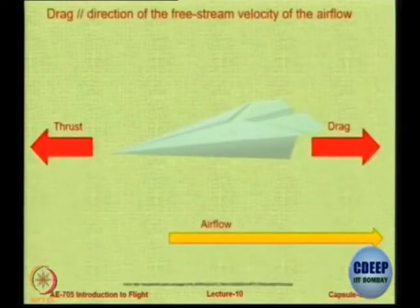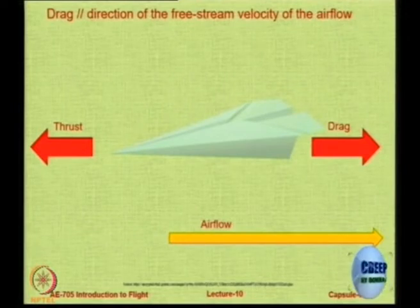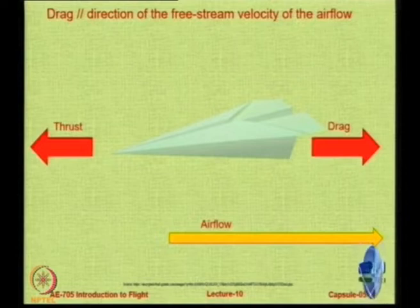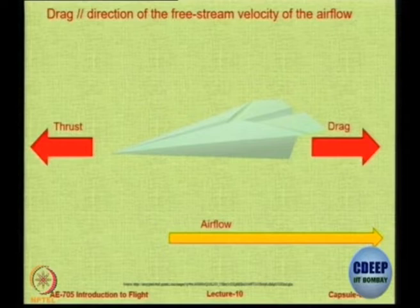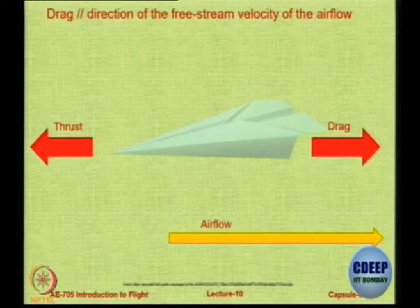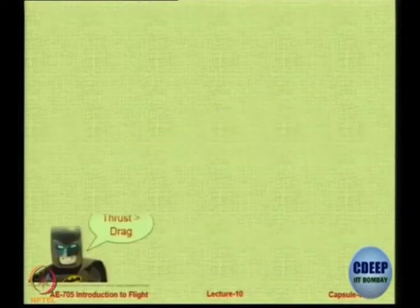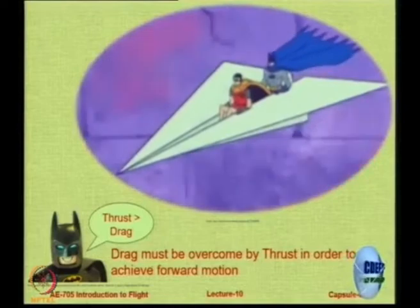When you have airflow or relative velocity, you get a force, and the force is basically the reaction acting on the body. A component of that which is parallel to the free stream direction is called drag, and that is overcome in flight by providing the thrust force. So essentially we need to have thrust equal to drag if we would like to have forward flight. We will look at a special presentation on power plants or engines after the mid-semester.